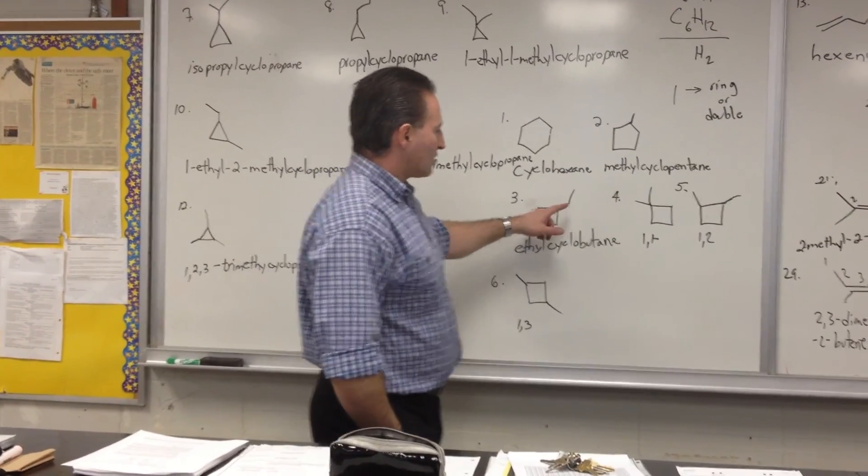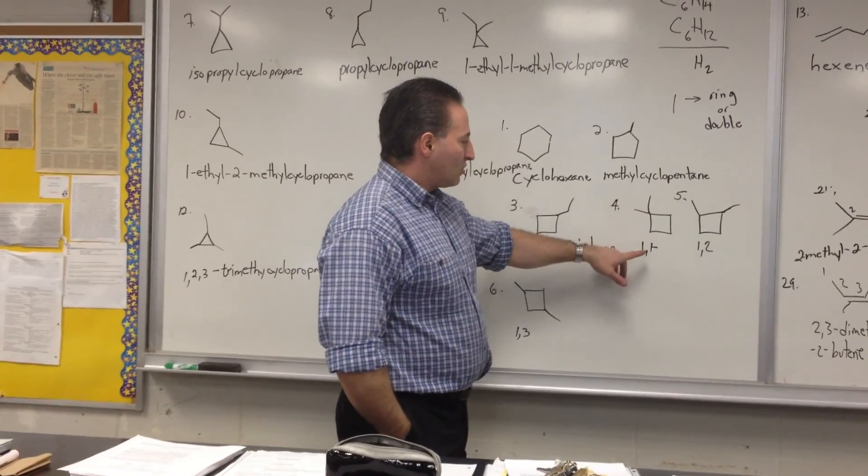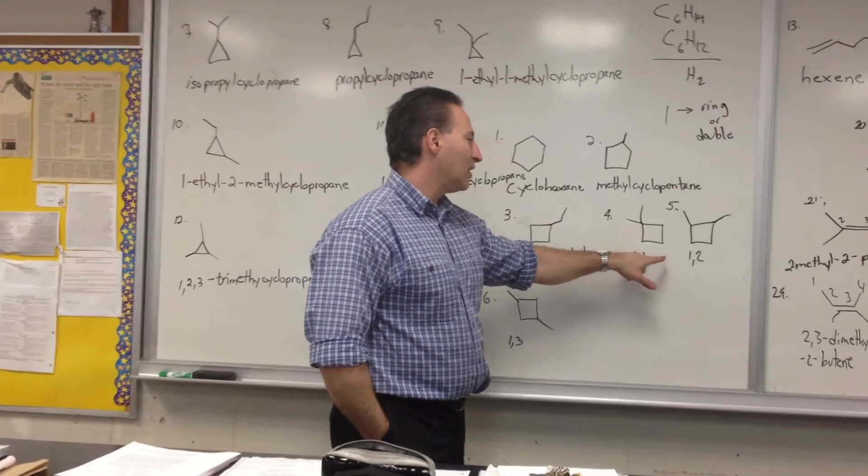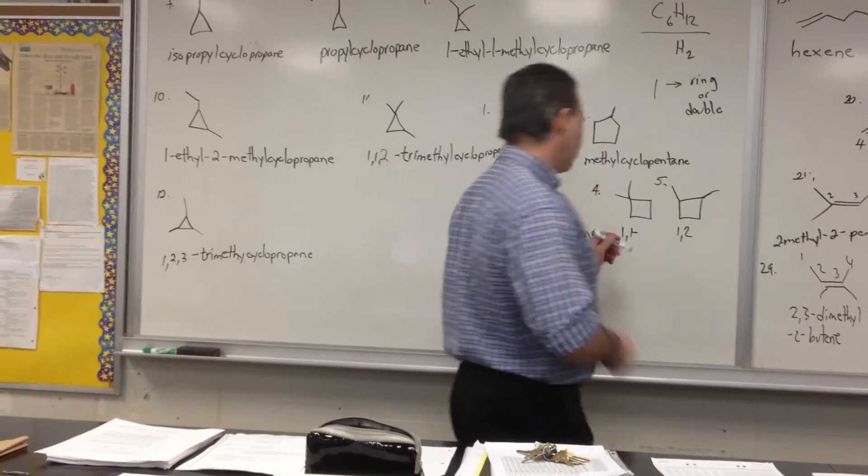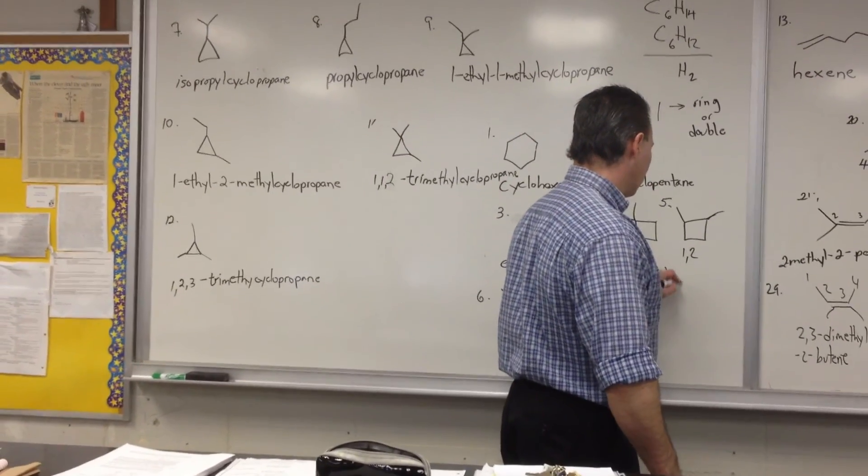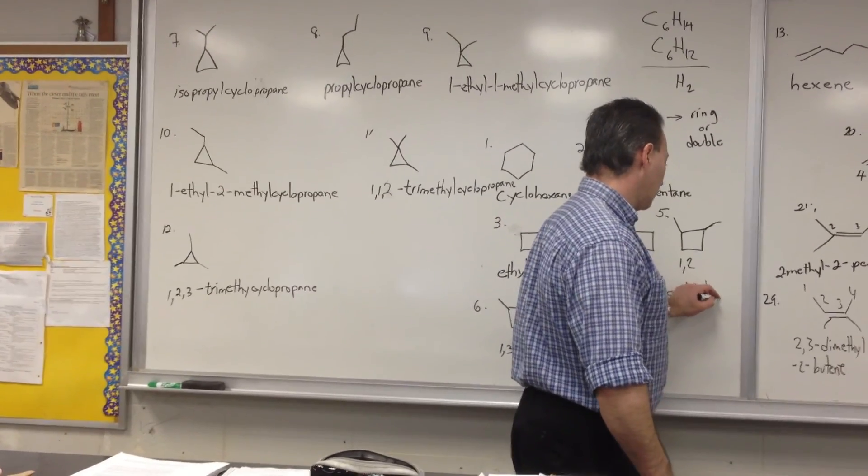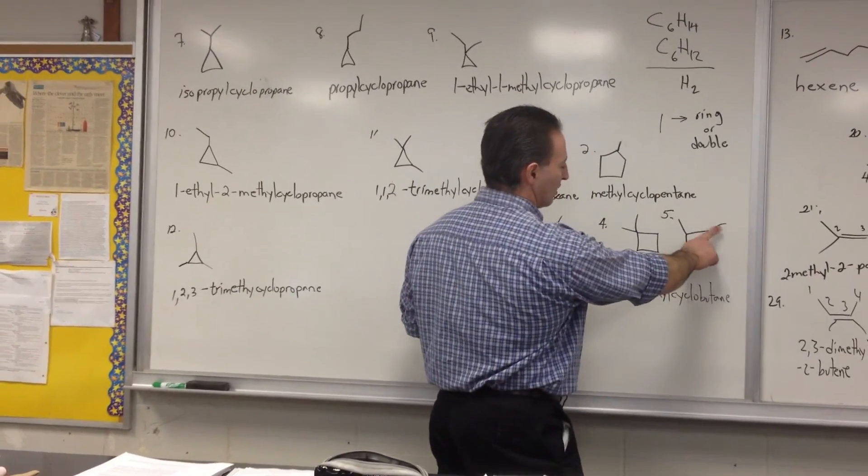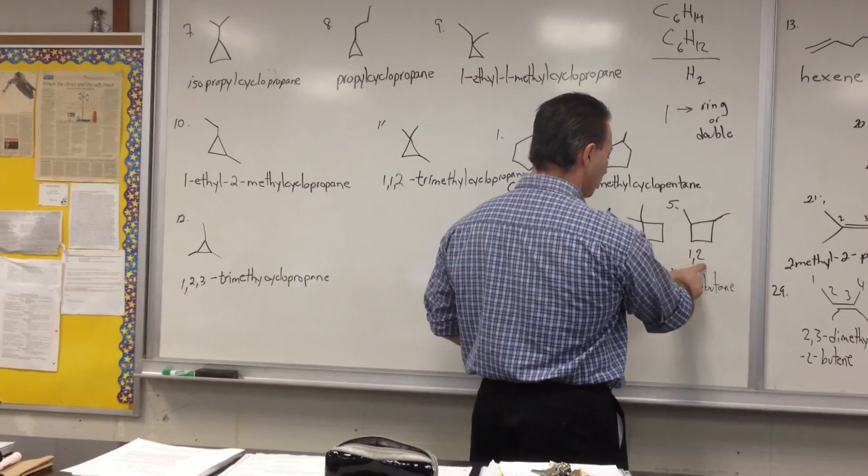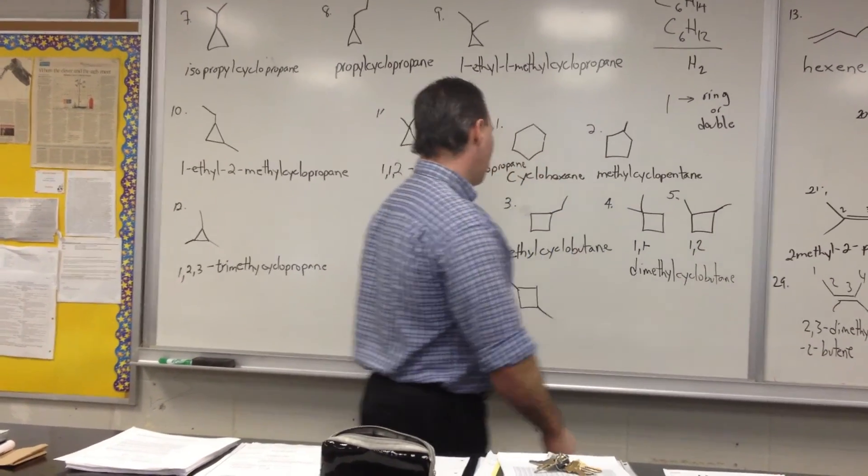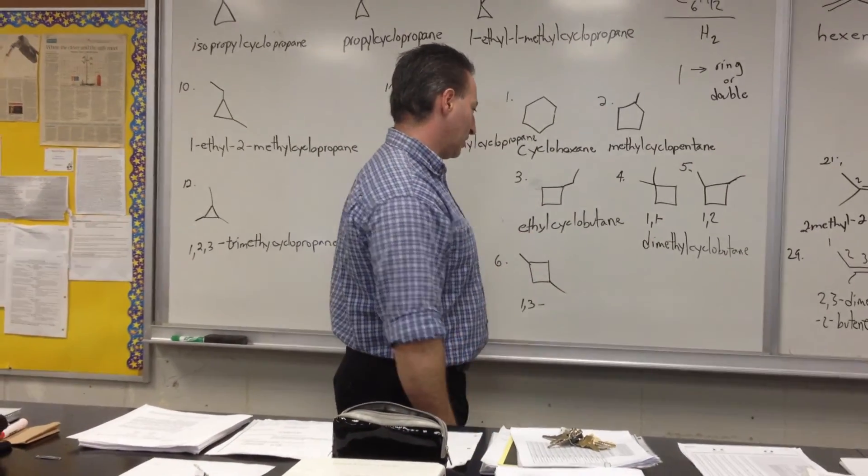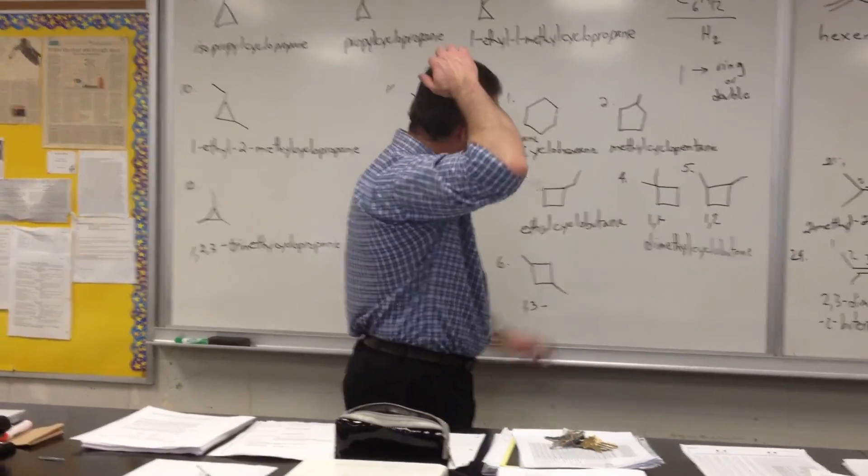Then we start moving down to single methyl groups in the same position. So it can be called 1,1-dimethylcyclobutane. If you move the methyl group to the next position on the same cyclobutane, you get 1,2-dimethylcyclobutane. And you also get the possibility of 1,3-dimethylcyclobutane.